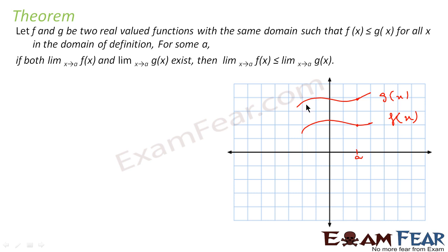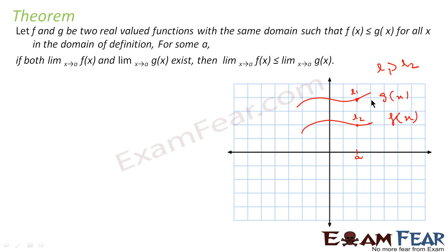It's very common sense: if there are two functions f(x) and g(x) where g(x) is always bigger than f(x), and at x equal to a the limit exists for both, then the limit will also have the same property. So the limit value l1 of g(x) at x equal to a is greater than the limit value l2 of f(x) at x equal to a.